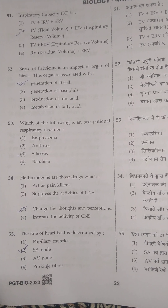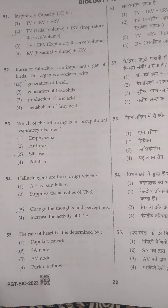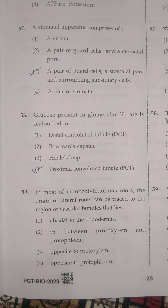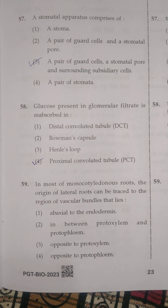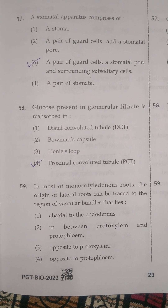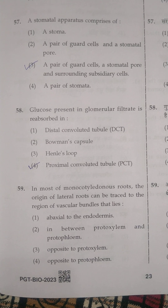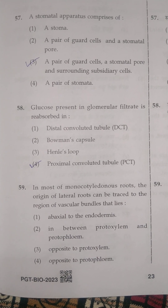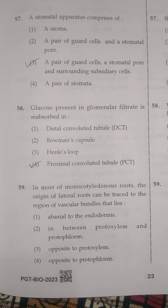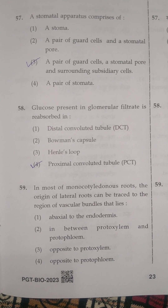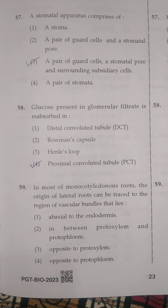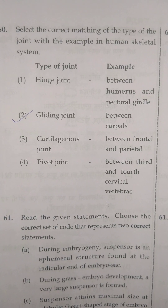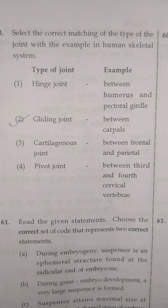The next question: stomatal apparatus consists of its correct answer, option 3 — a pair of guard cells, stomatal pore, and surrounding subsidiary cells. The next question: glucose present in glomerular filtrate is reabsorbed in its correct answer, option 4 — proximal convoluted tubule.